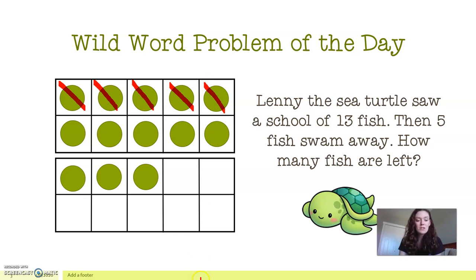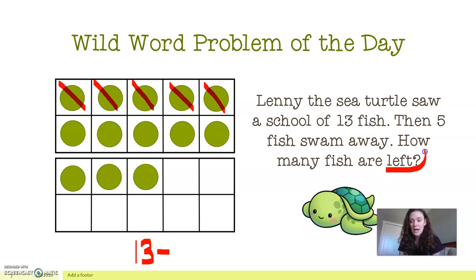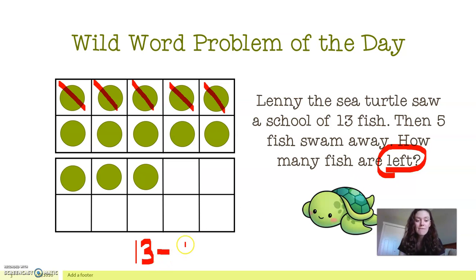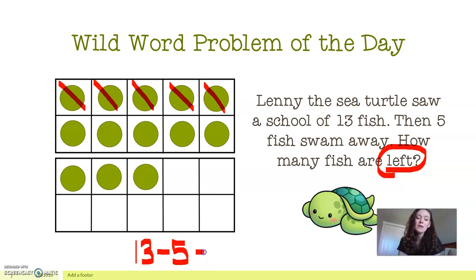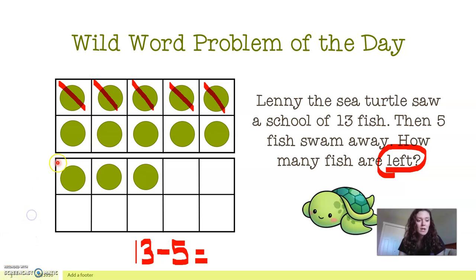So we basically just did our equation like this. We started out with 13 — we have 13 counters which represent our 13 fish. Then we subtracted, because we know we're looking for that magical word, words that give us a hint to what type of problem we're doing. So we know this is a subtraction problem. We are subtracting five. So we just crossed off our five fish so we don't get confused. Our job now — one strategy we could use is to count the counters that we did not cross off. So let me get back to my laser pointer. We have one, two, three, four, five, six, seven, eight fish left.